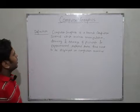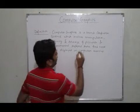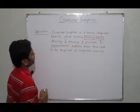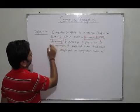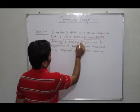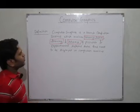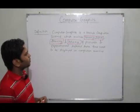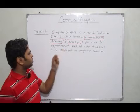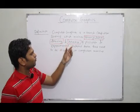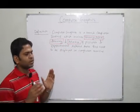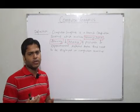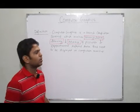In this definition, we have to focus on three words: manipulation, drawing and storing. When we talk about computer graphics, it basically focuses on the manipulation, drawing and storage of pictures and all those related data which we need to display on the computer monitor.